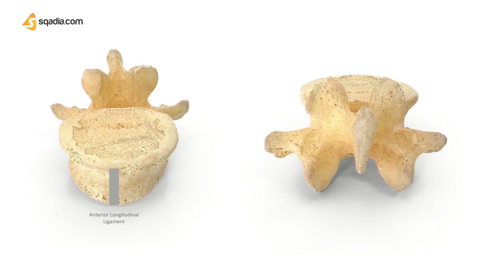Lateral to the anterior longitudinal ligament, we have the right crus of the diaphragm, which is attached to the upper three lumbar vertebrae, and the left crus to the upper two lumbar vertebrae. The transverse processes give attachment to various muscles and lumbar fascia.